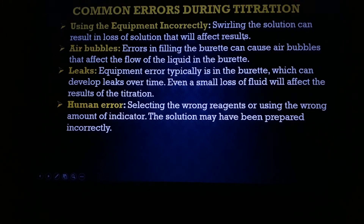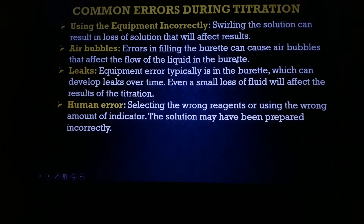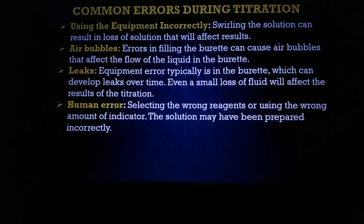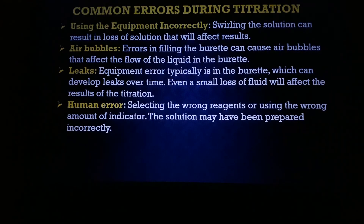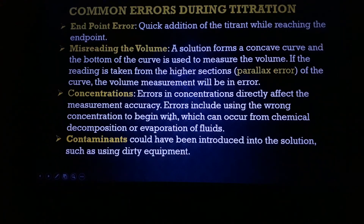Excessive swirling can cause spillage of solution and give erroneous results. Air bubbles during filling of the burette can affect the flow of fluid and lead to endpoint errors. Leaks in the equipment create errors and affect the actual endpoint. Human errors — such as selecting a wrong reagent, using the wrong amount of indicator, or wrongly preparing solutions — are always a major source of error in titrations.